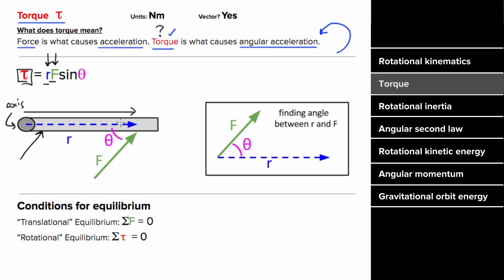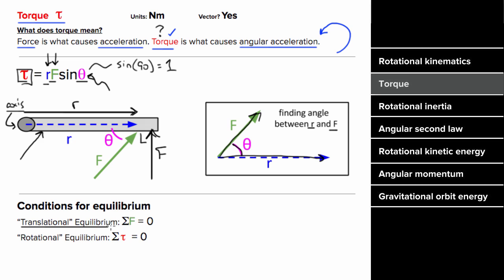R represents how far the force is applied from the axis. To maximize torque, you want to point the force perpendicular to R, since sine of 90 degrees equals one. To maximize torque: exert the force as far away as possible from the axis, and exert that force perpendicular to the line from the axis to that force. The angle in the formula is always the angle between R and F. Just like an object is in translational equilibrium if the net force is zero, an object is in rotational equilibrium if the net torque is zero, causing angular acceleration to be zero.